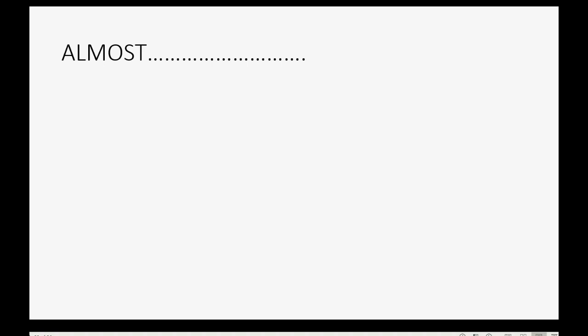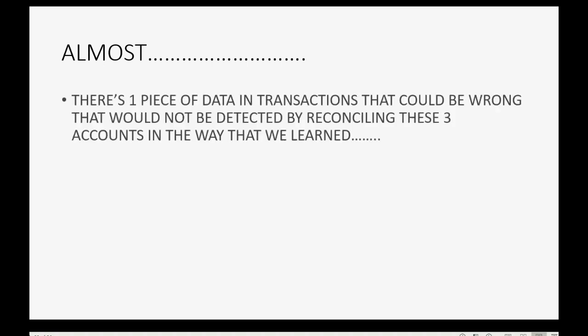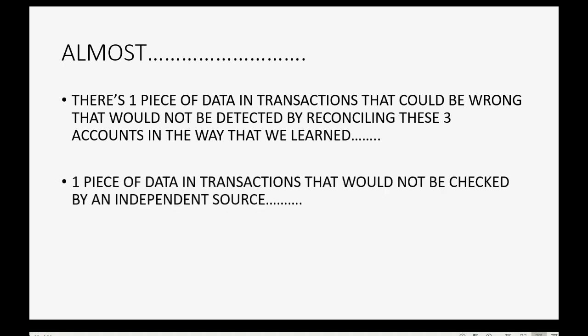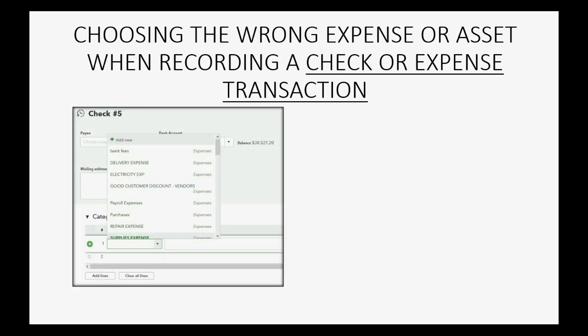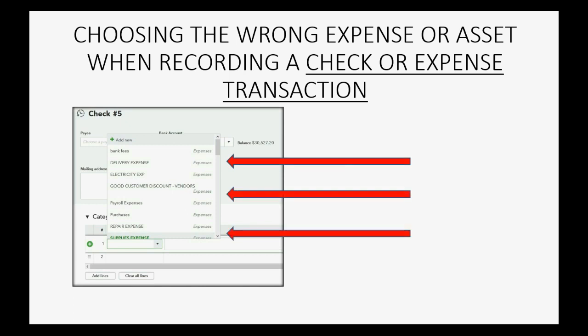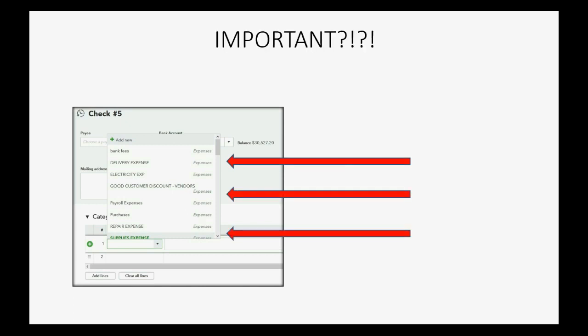So we're almost there — we've almost covered every possible piece of data in a set of company records. There is one piece of data in transactions that could still be wrong that would not be detected by reconciling these three accounts, and would not be checked by an independent source. Can you guess what it is? The answer is choosing the wrong expense or asset when recording a check or expense transaction. That field of data is the only one that's not checked by an independent source.